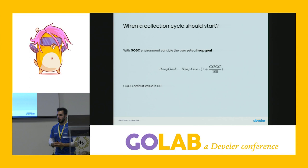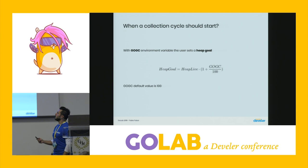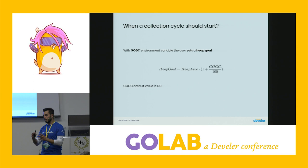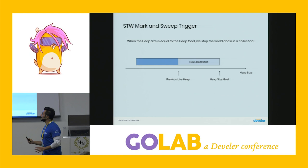We also need to know when to start a collection. The GOGC environment variable sets the heap goal for the next collection. Starting from the live heap size at the end of a collection, we calculate the next goal using a formula. By default, GOGC is 100, meaning the next collection starts when the heap size would exceed twice the size of the live heap.